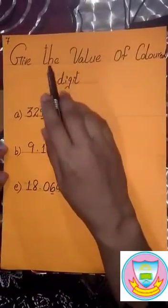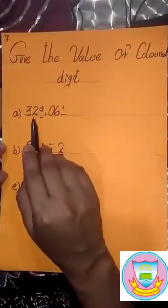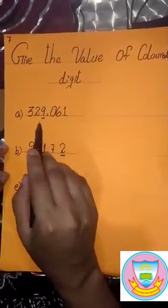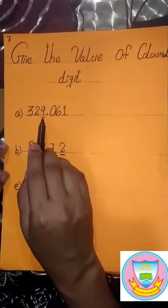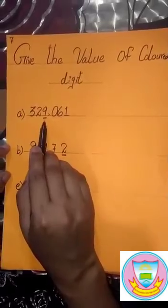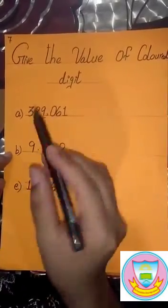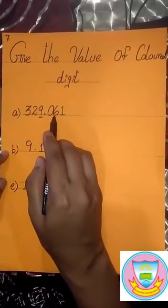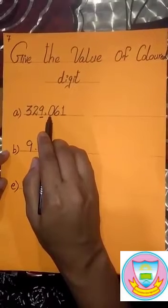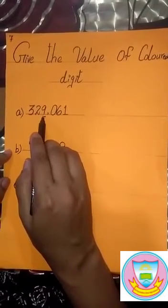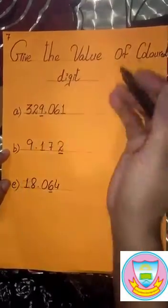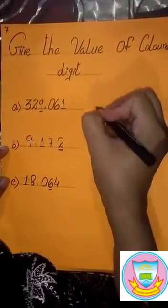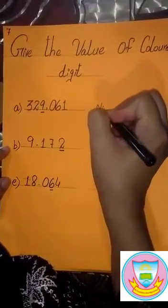Now we solve the question. The question is: give the value of the colored digit. Our first question is 3,29,061. We find the value of the nine digit, which is underlined. The first digit is in ones, six is in tens, zero is in hundreds, and nine is in thousands.